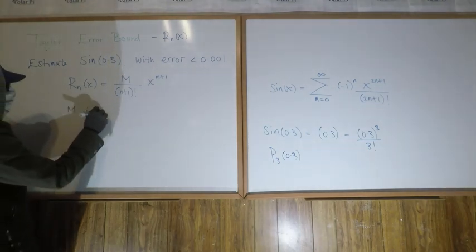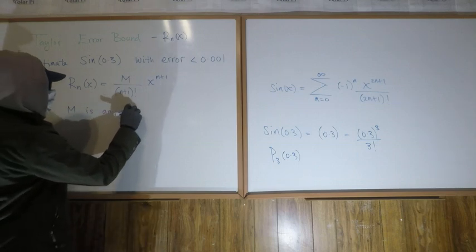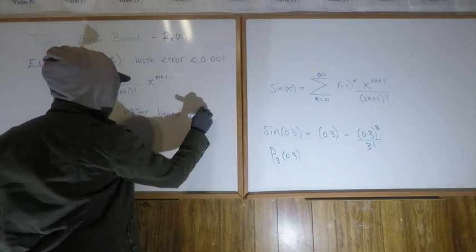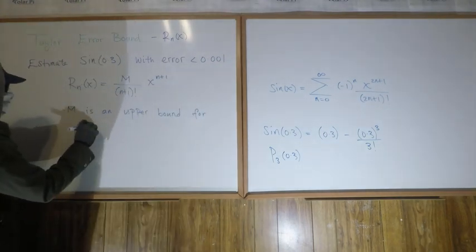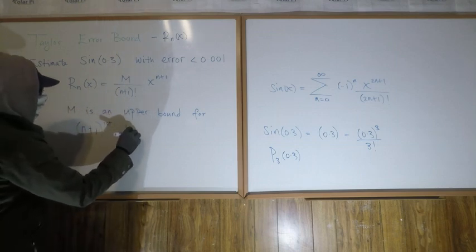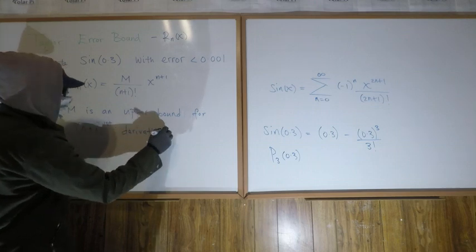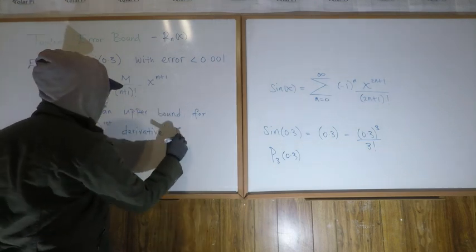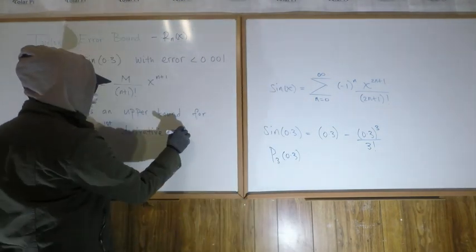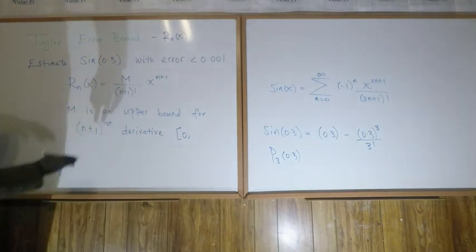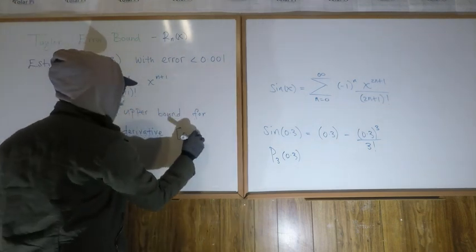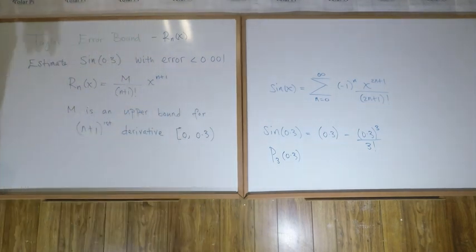M is an upper bound for the n plus 1st derivative on the interval from a to x. Since we're working with the Maclaurin series, a is 0, so the interval is 0 to x. Our x here is 0.3 because we're evaluating sine of 0.3.